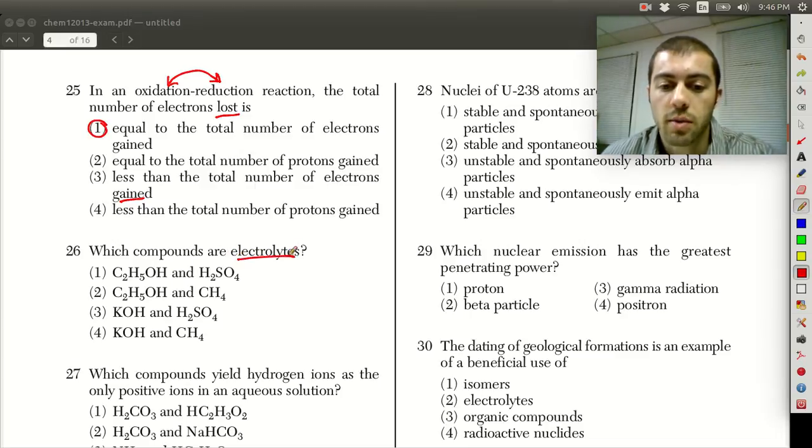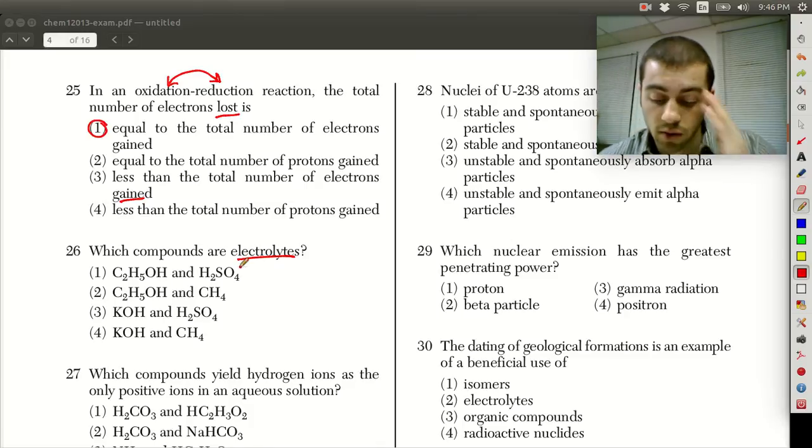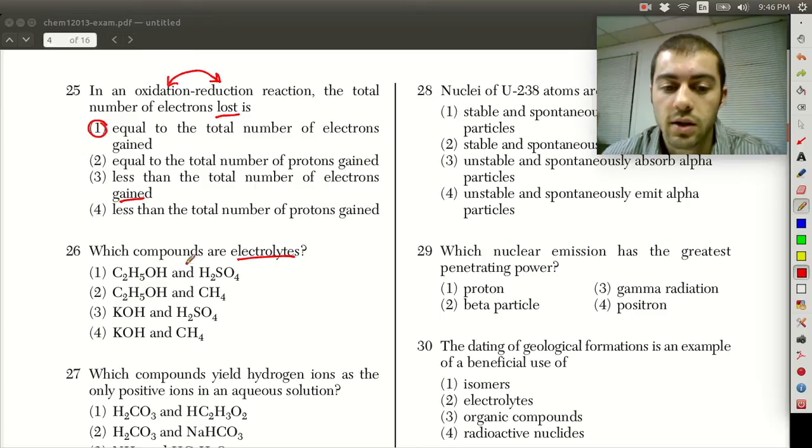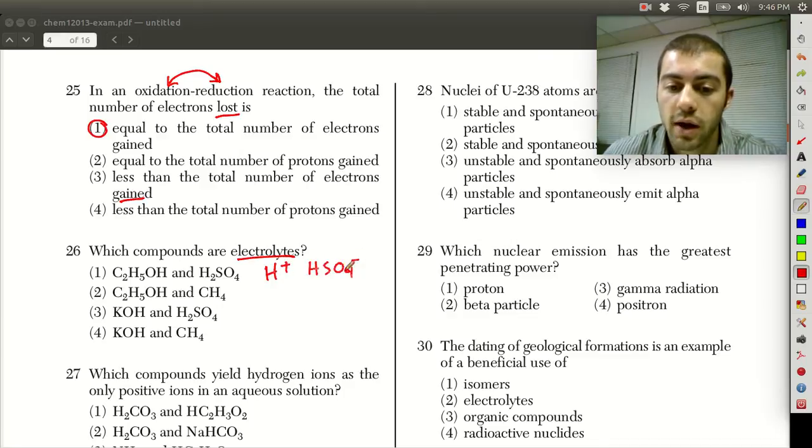For question 26, which compounds are electrolytes? Electrolytes are things that break up into ions. Looking at these, we want to see can we break these compounds up into ions. Looking at the first choice, we have H2SO4. We can break that up into H+ and HSO4- or 2H+ and SO4 2-. So this one does break up into ions.